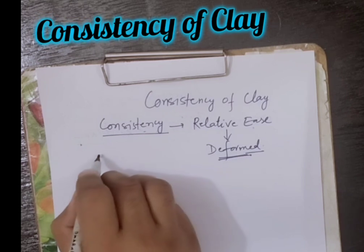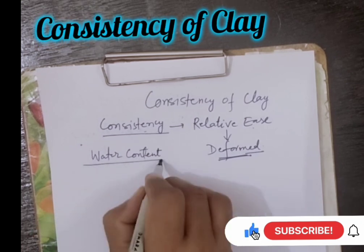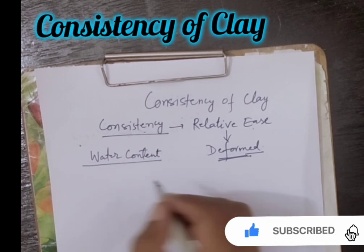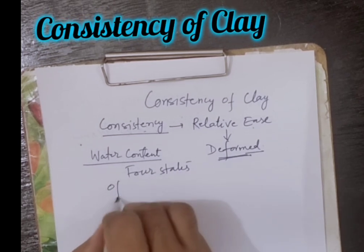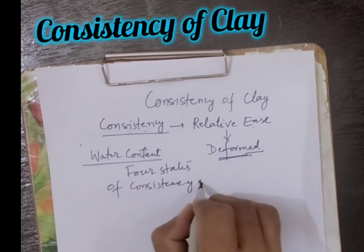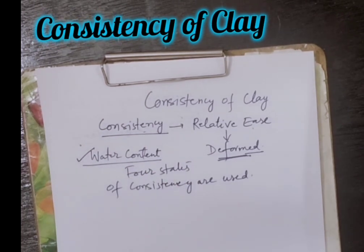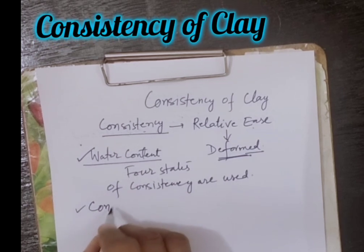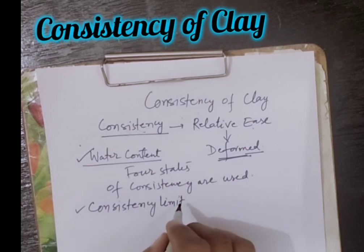Depending upon the water content, there are four states of consistency. These four states are used normally and depend on the water content. And due to this, these are called consistency limits.